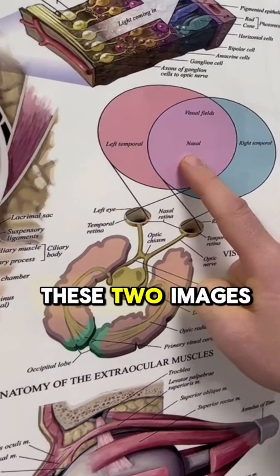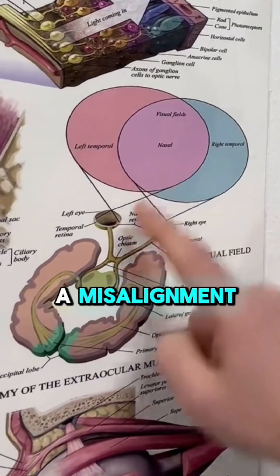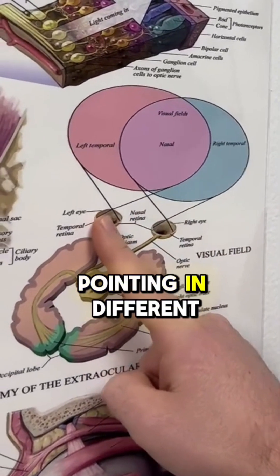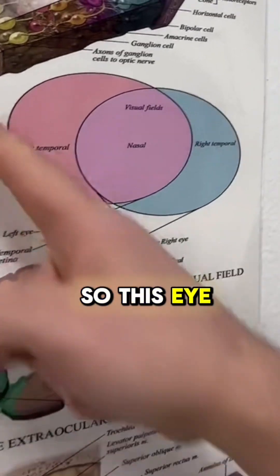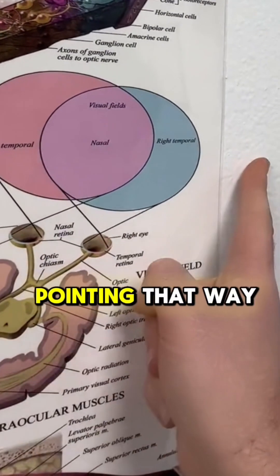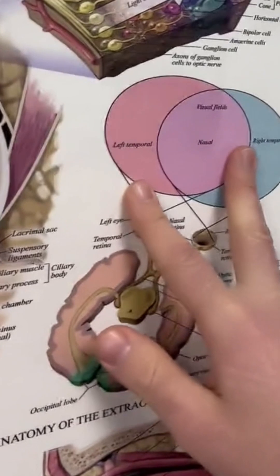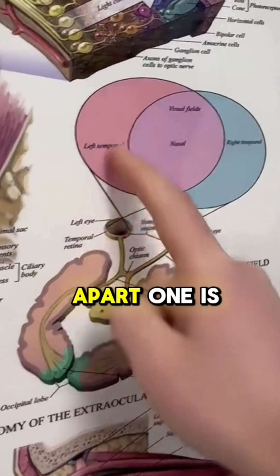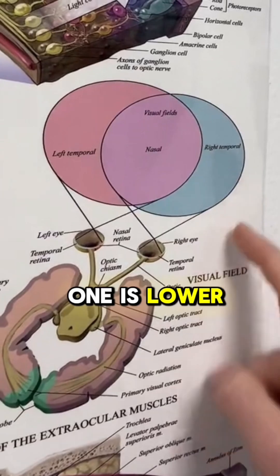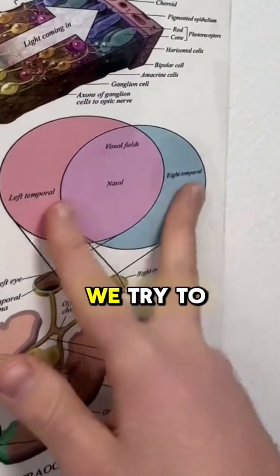The brain needs to combine these two images. When you have a misalignment, your eyes are pointing in different directions. So this eye is pointing this way, this eye is pointing that way, and these two visual fields now are not close to one another. They are further apart, one is higher, one is lower.